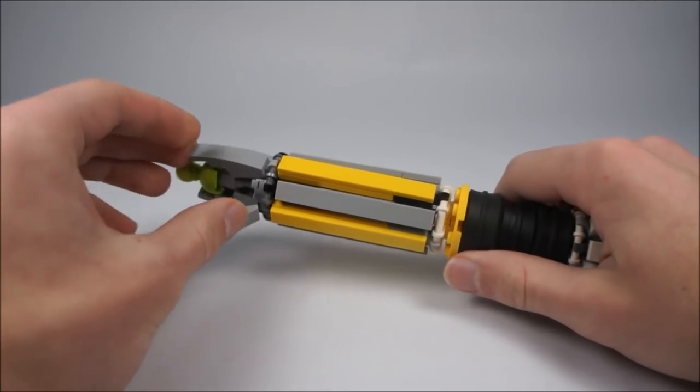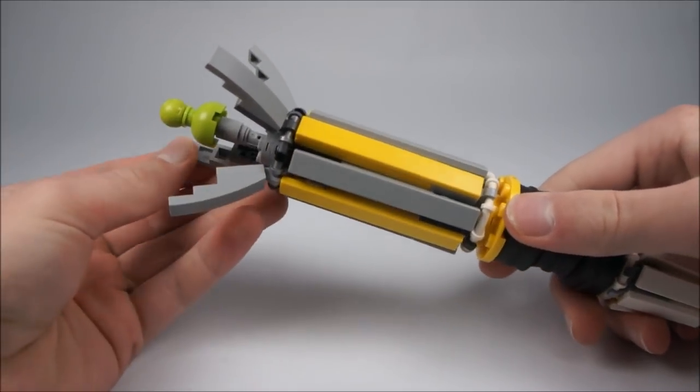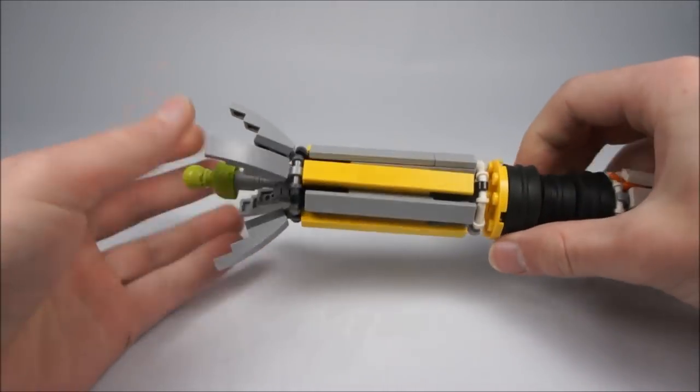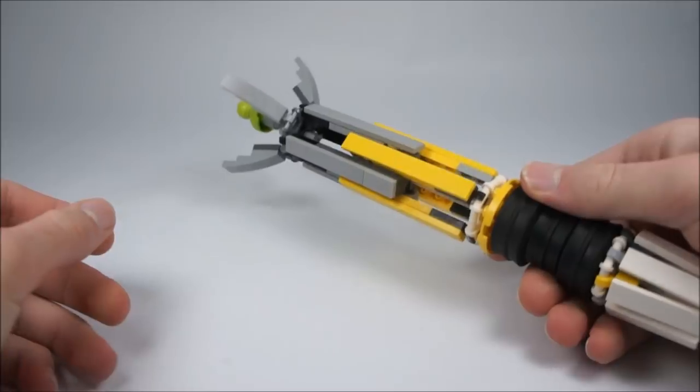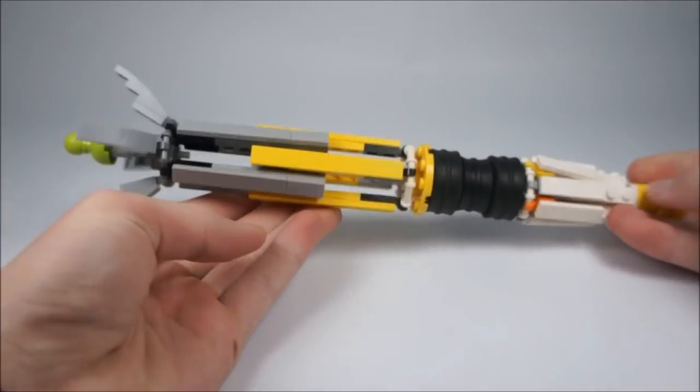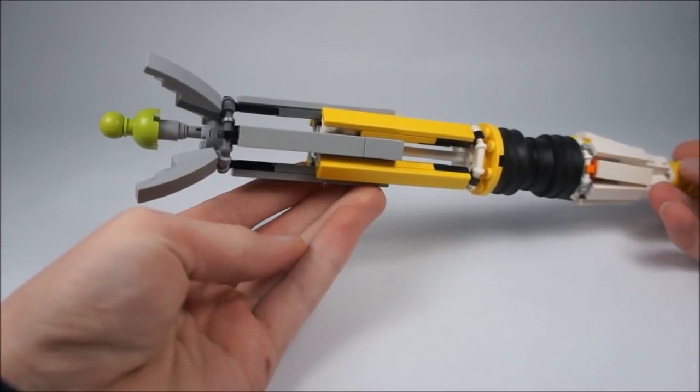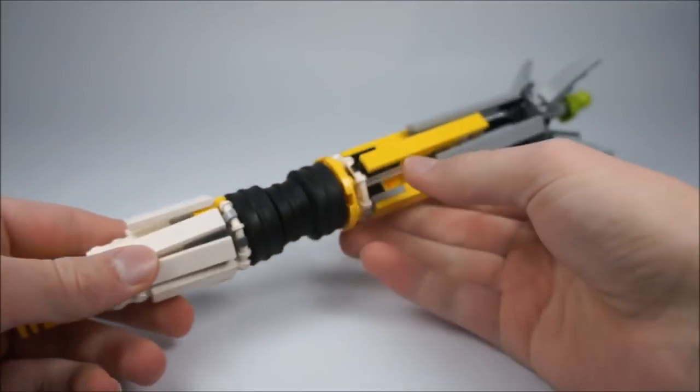So first of all, the claws do open up to reveal the emitter, as I showed before. And then of course the cage extends. It extends all the way and creates the extended version of the sonic screwdriver.